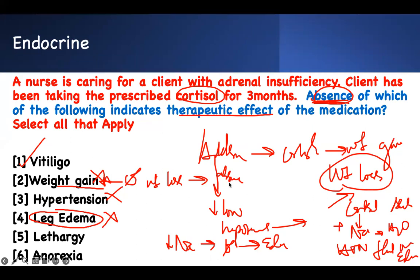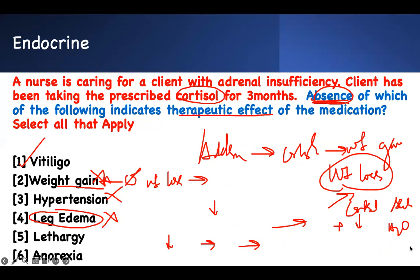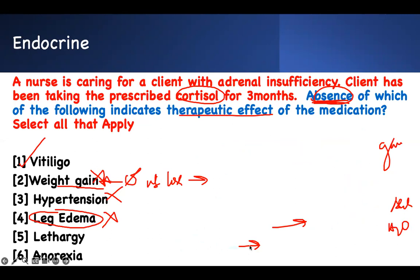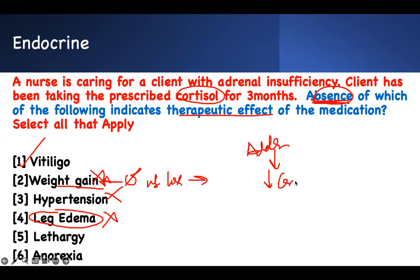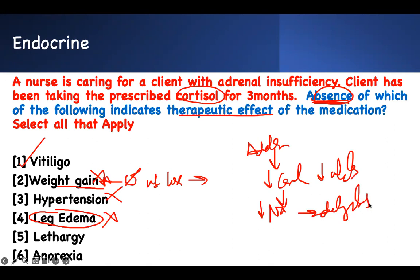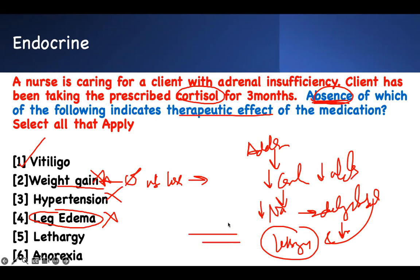When you have Addison's, because they have low cortisol and low aldosterone, what will happen? Sodium is low, they get dehydrated and become lethargic because blood pressure is low. Therefore, when you give them cortisol, you solve this problem — their sodium goes up, they retain water, and that resolves the lethargy. So absence of lethargy means your cortisol is working.